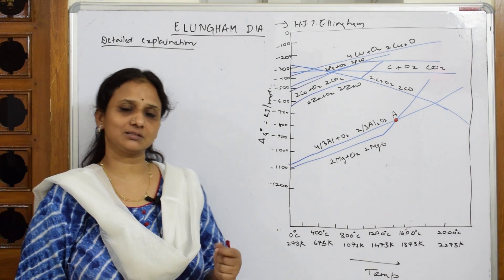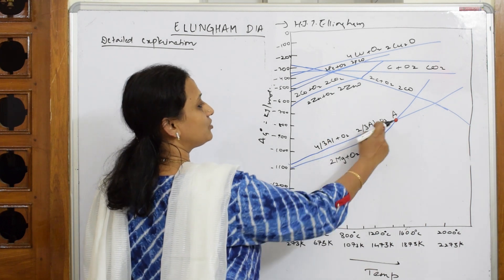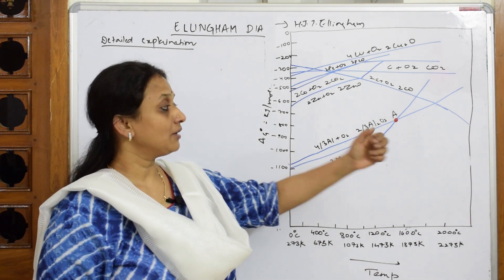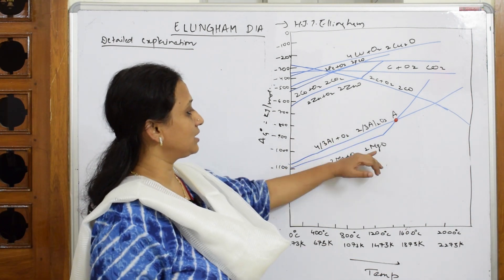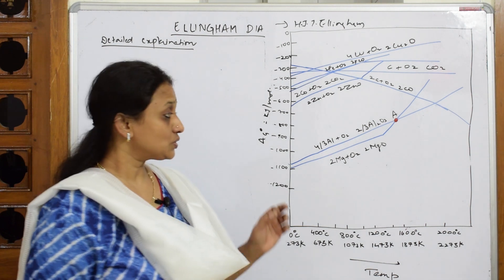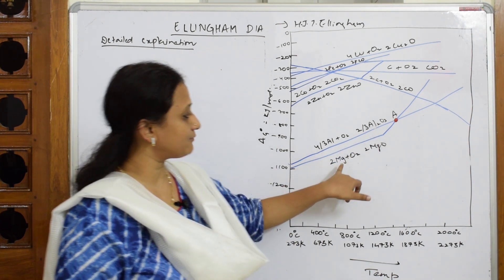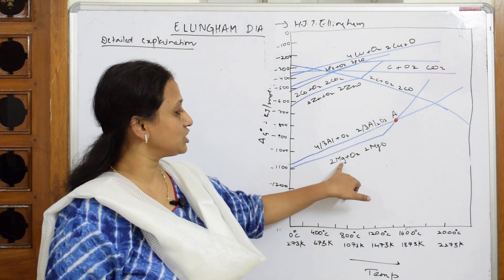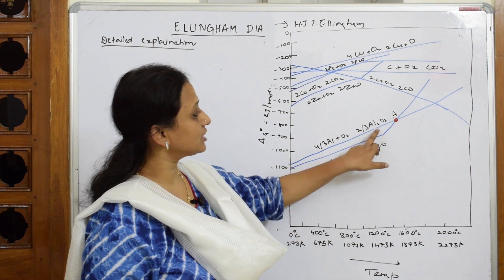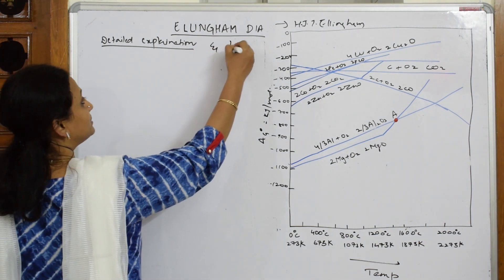In the Ellingham diagram you have a series of metal oxides — metals getting oxidized to metal oxides everywhere. Now we are choosing: if I have to reduce a metal oxide to its metal, which reducing agent should I use? For example, to reduce aluminium oxide (Al₂O₃) into aluminium metal, should I use magnesium or zinc? That choice is what the Ellingham diagram answers.